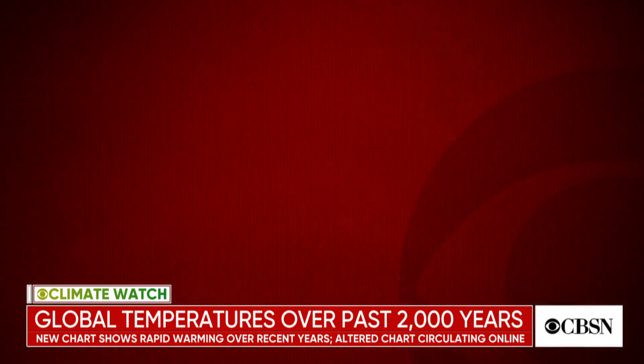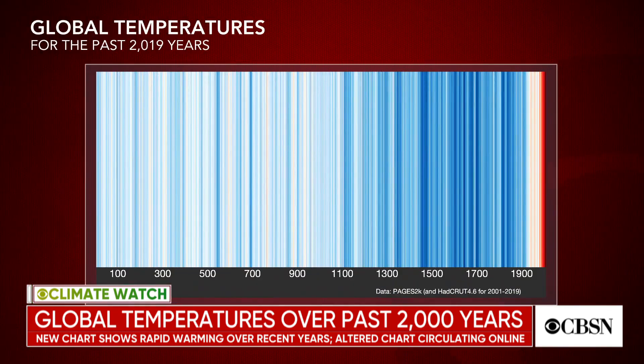They take sediment records, ice core records, pollen records, coral records, and they're able to determine by the amount of growth in a tree ring, the amount of growth in a coral, or certain aspects of an ice core, exactly how warm or cold it was during that time. And they're able to reconstruct this.